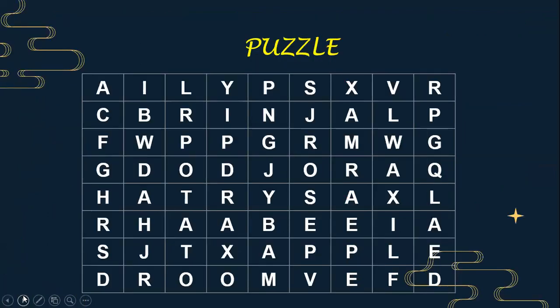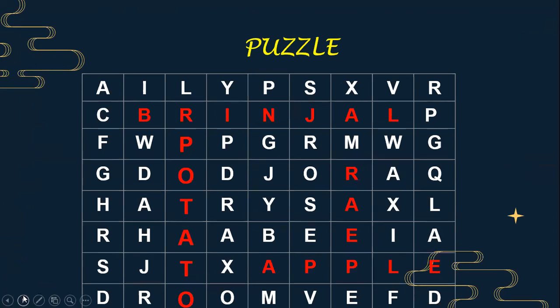Here is a puzzle where you can find some of the fruits or vegetables in the jumble word puzzle which rapidly undergo enzymatic browning. Can you find them? The vegetables like brinjal and potato, and the fruits like apple and pear, undergo rapid enzymatic browning.